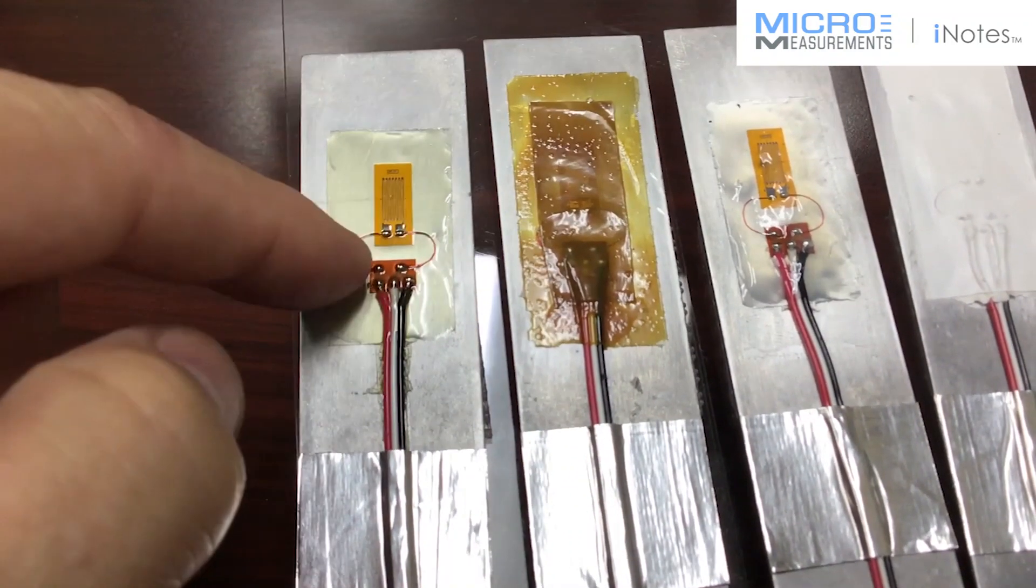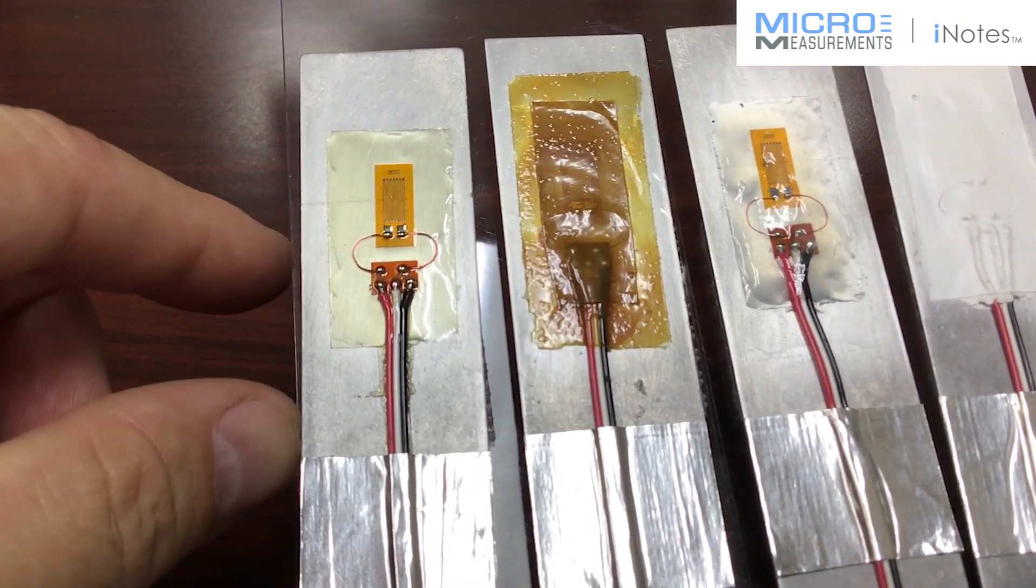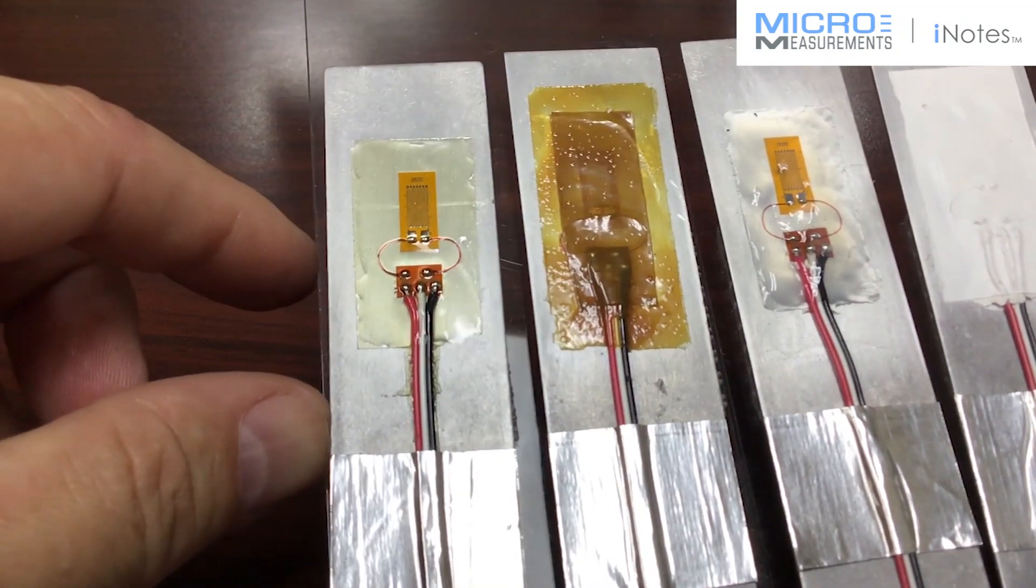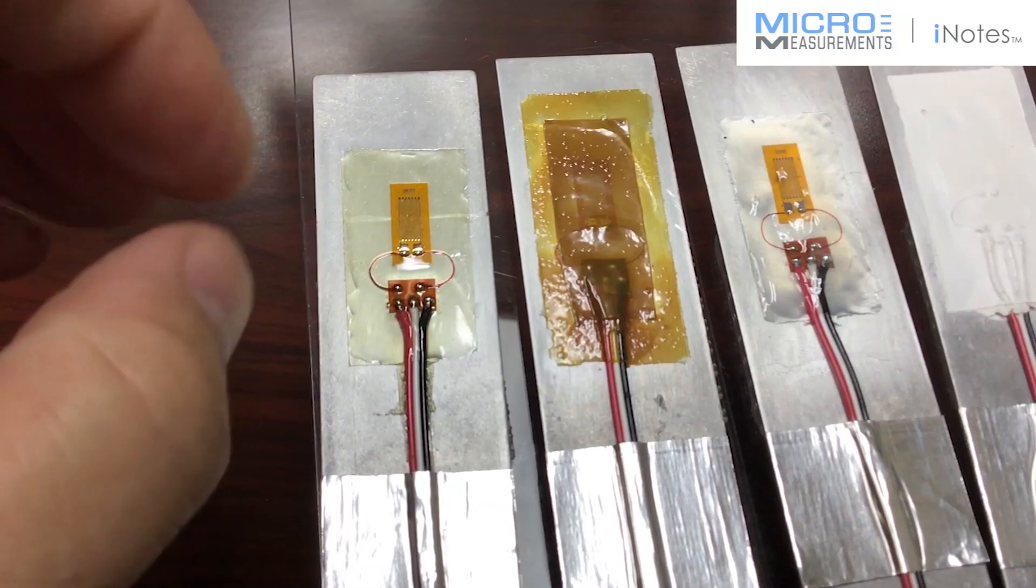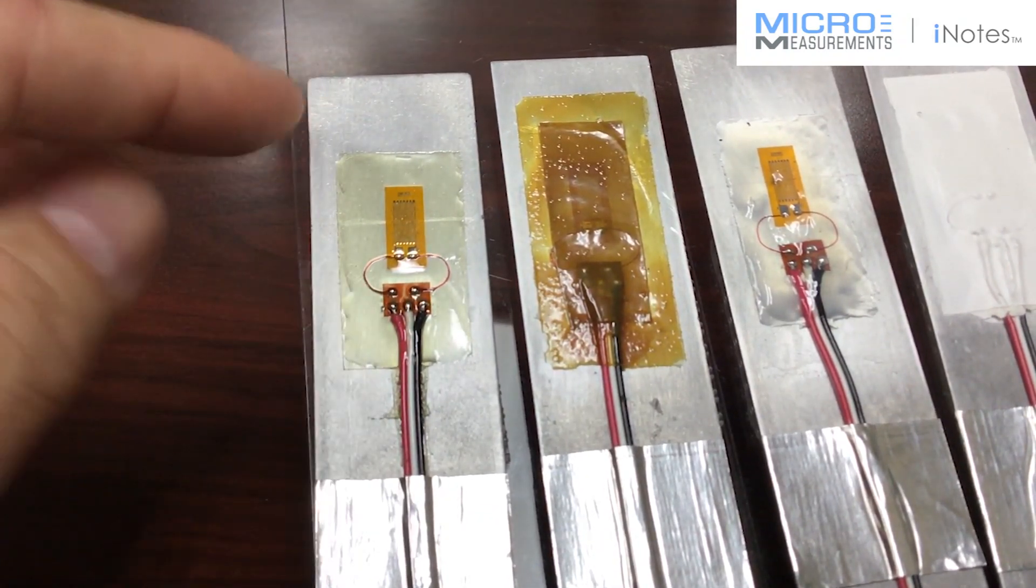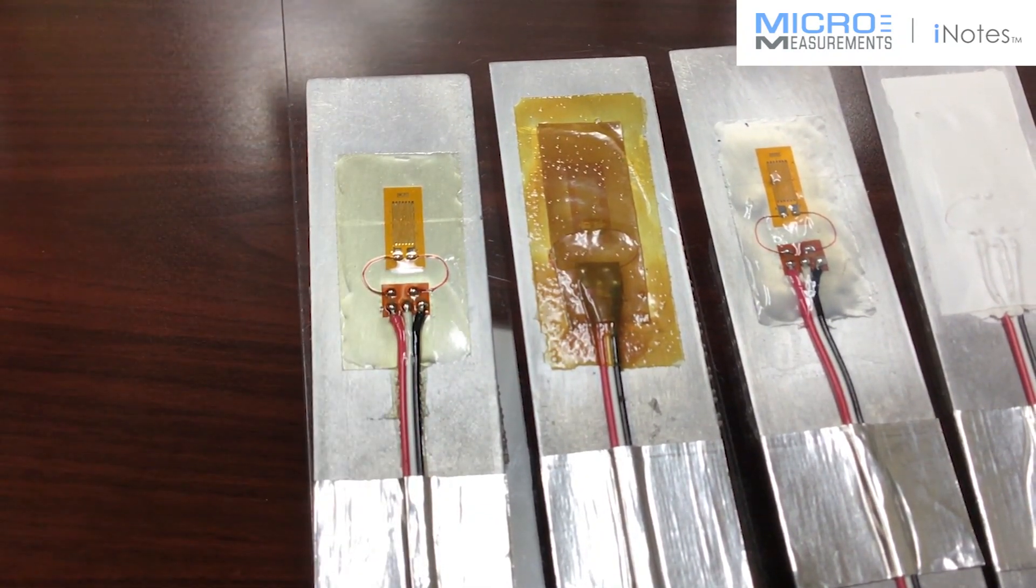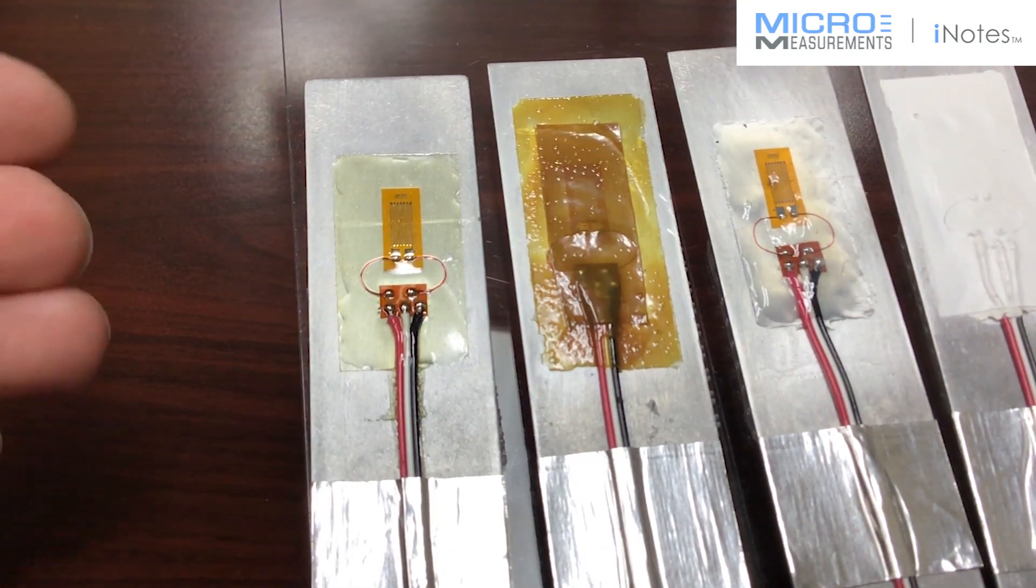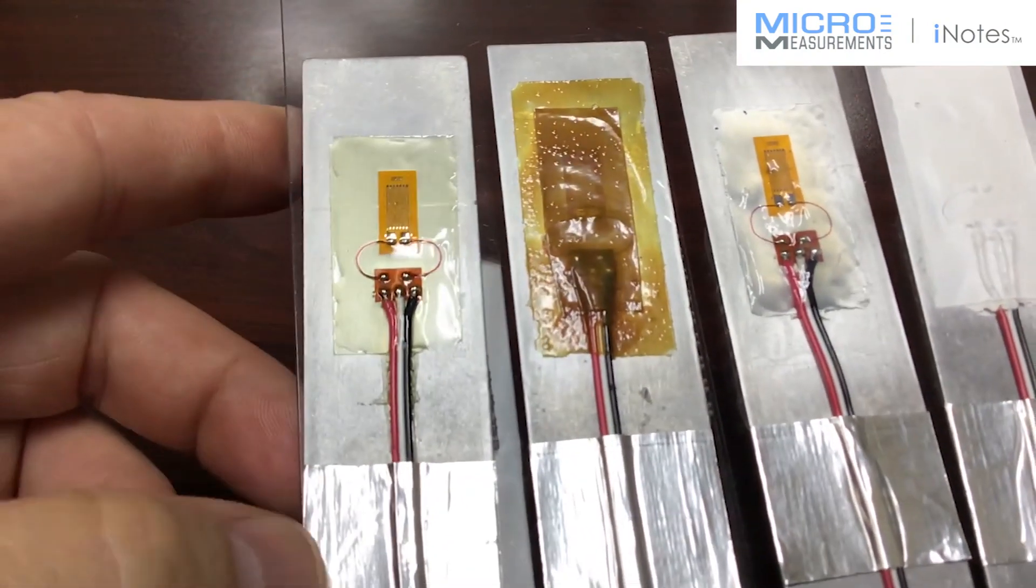It forms a thin hard layer over top the gauges. It's about like the conformal coatings that they put over top of printed circuit boards. It's a thin layer that's good for laboratory type environments, but if you have a more adverse environment you probably ought to consider going to something else.